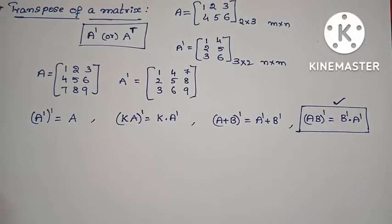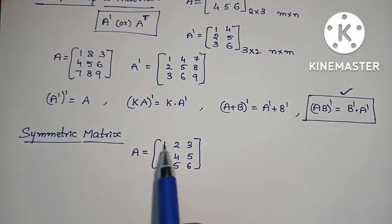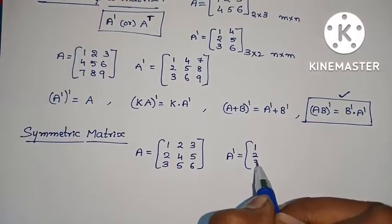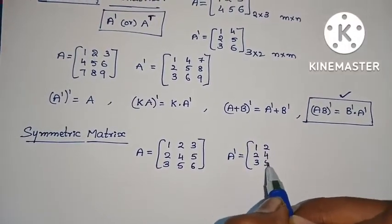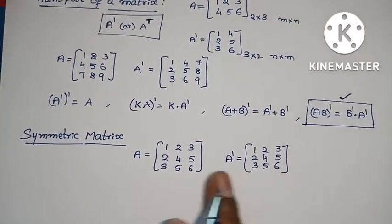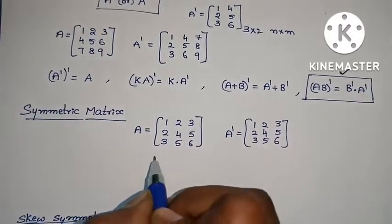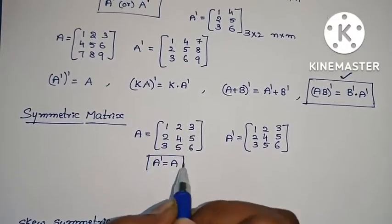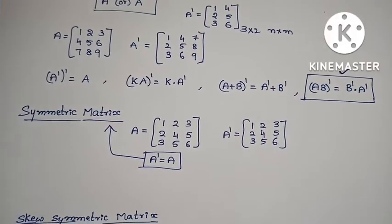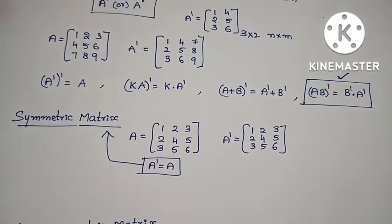Next topic: symmetric matrix. A symmetric matrix example — first row: 1, 2, 3; second row: 2, 4, 5; third row: 3, 5, 6. If A transpose equals A, it is a symmetric matrix.